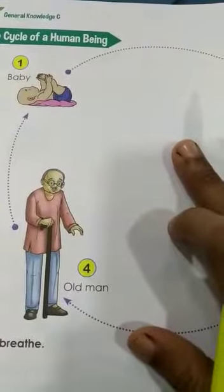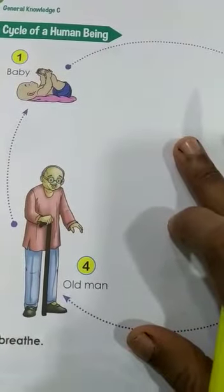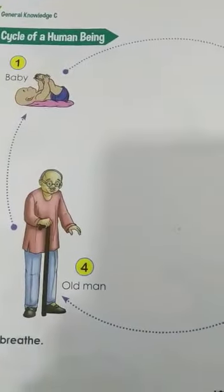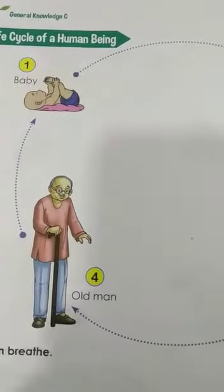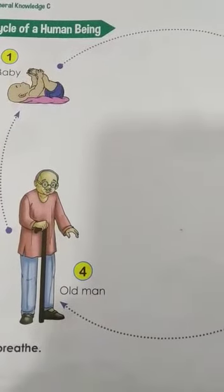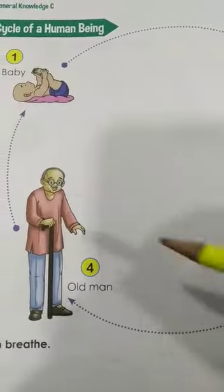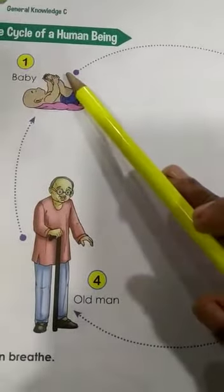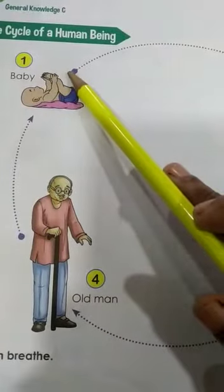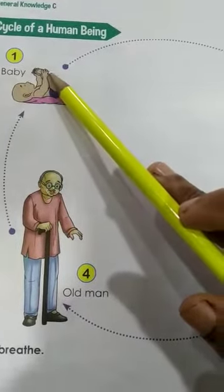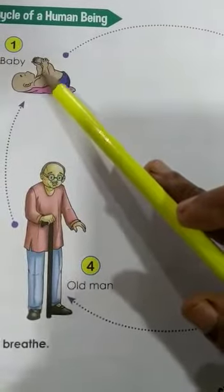Today we are learning the life cycle of human beings. Human beings — we are all human beings. So how is the life cycle? How do we grow? How will our life be? That is called the life cycle. So first, baby — you take birth when you are small; you are babies. When you are born, you are small babies.